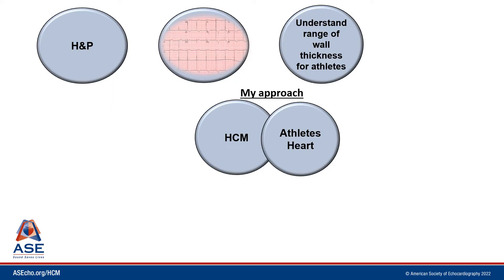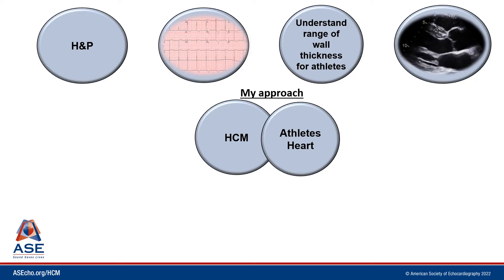It's also important to understand the range of normal wall thicknesses for athletes, which depends on multiple factors including the sport the athlete participates in, their gender, their race, and their size. We then pay careful attention to the distribution of increased wall thickness — it's unusual for an athlete to have a difference of two millimeters between contiguous segments.